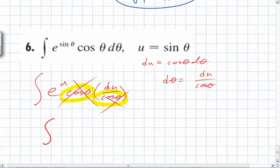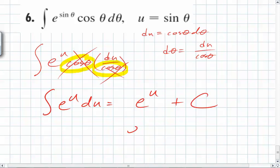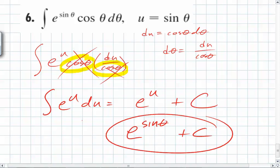So you're left with the integral of e to the u du, which is equal to e to the u plus c, and what does u equal? So the final answer here is e to the sine theta plus c. That's it.